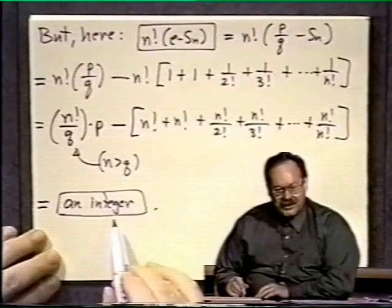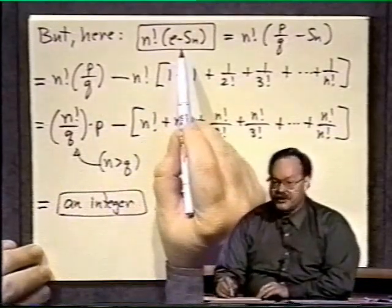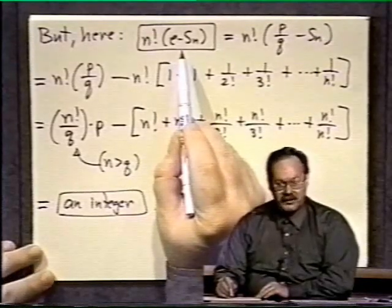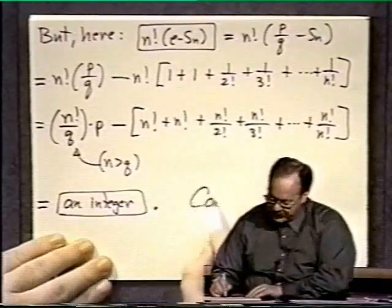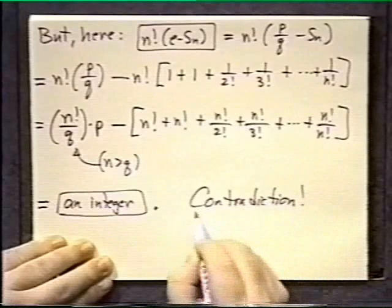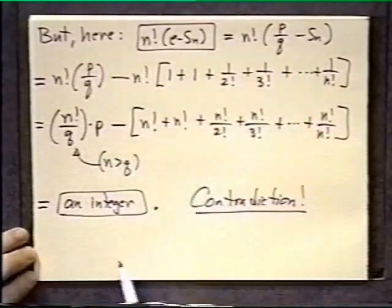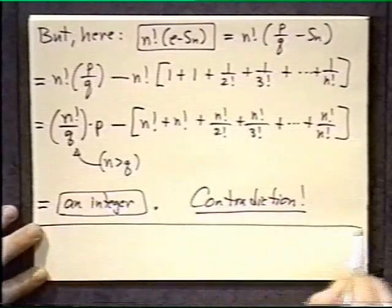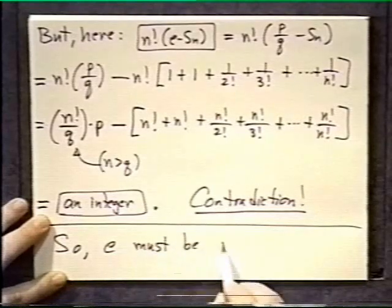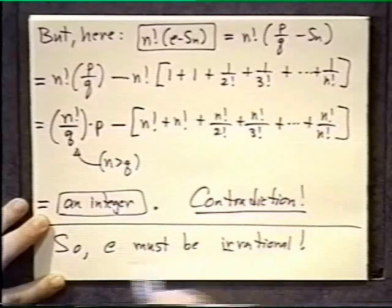And there's our contradiction, because what is this all equal to? It's equal to this number here, which we claimed just a moment ago was not an integer, being between 0 and 1. And now we've claimed that it is an integer. This is our contradiction. And the contradiction arose, because we assumed that e was p over q rational. So there is only therefore one conclusion. So e must be irrational. And there you have it. That's the end of the proof.